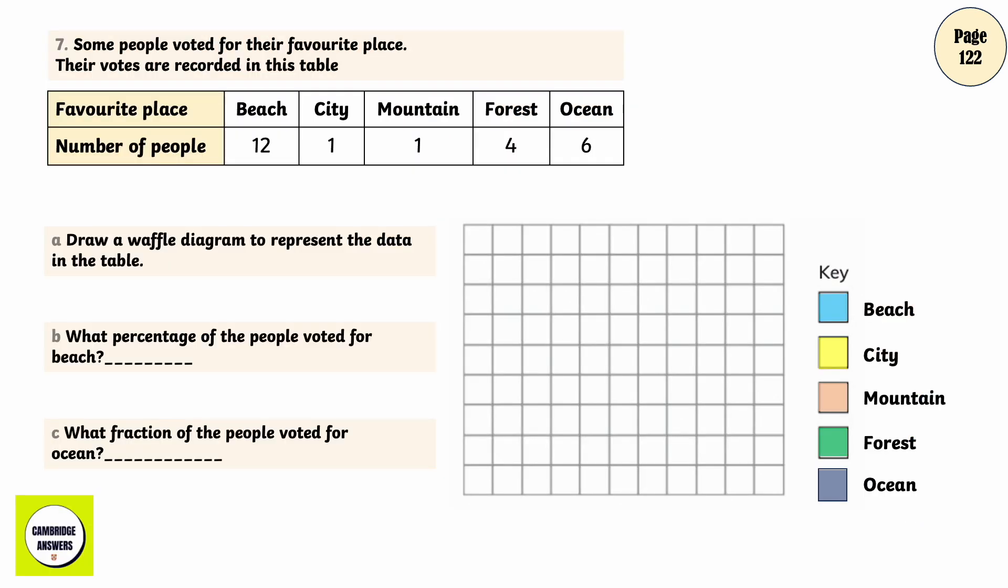Some people voted for their favourite place. Their votes are recorded in this table. Favourite place, Number of people. Beach 12, City 1, Mountain 1, Forest 4, Ocean 6. Draw a waffle diagram to represent the data in the table.